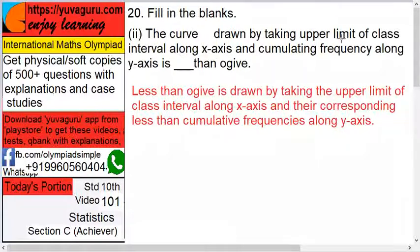So what are you taking? Upper limit class. I have again taken the same thing in the ogive video - less than and more than ogive - which I discussed earlier, so follow that. See here, just a hint: less than ogive is drawn by taking the upper limit of the class interval along the x-axis